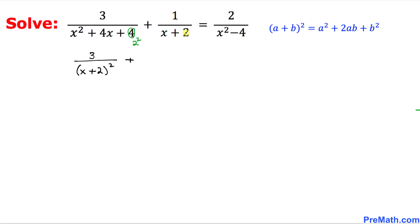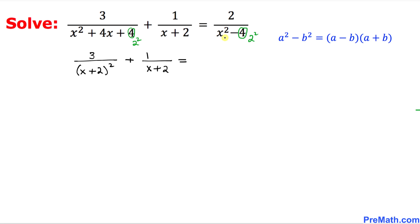The second fraction I'm going to leave as is: 1 over (x + 2) equals 2. On the right hand side, the denominator 4 can be written as 2 squared, representing a difference of squares: x² − 2². Using the fact that a² − b² = (a − b)(a + b), this fraction can be written as 2 over (x − 2)(x + 2).